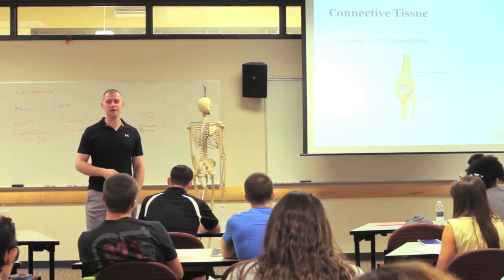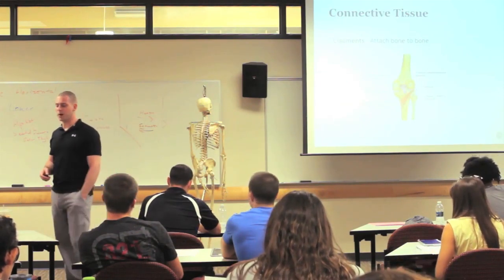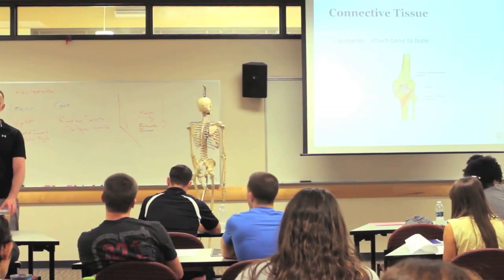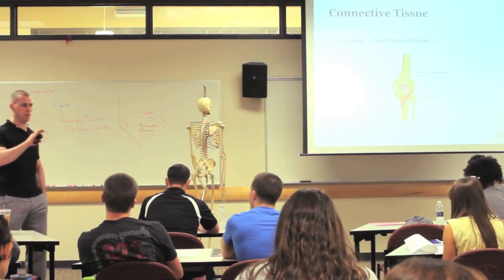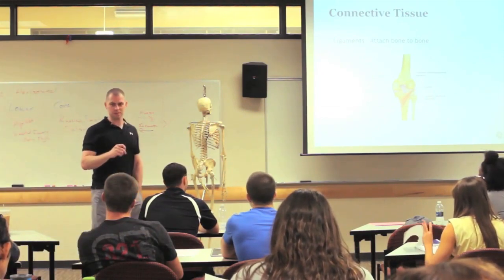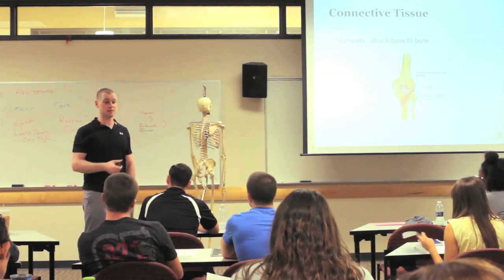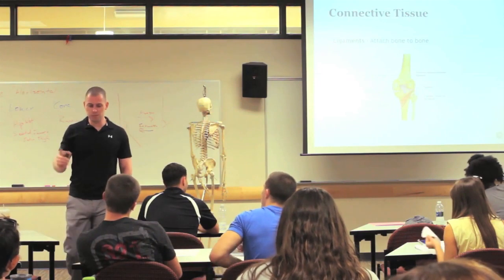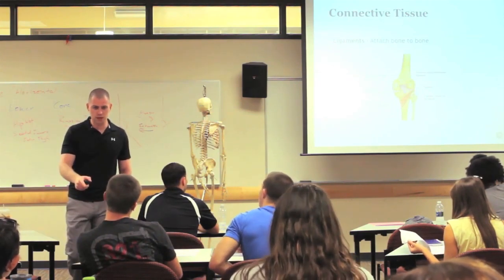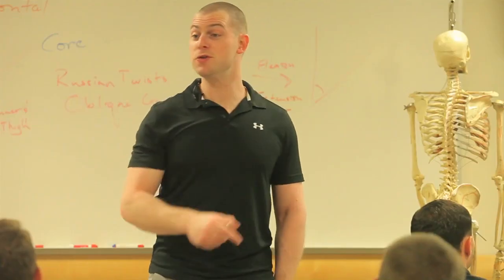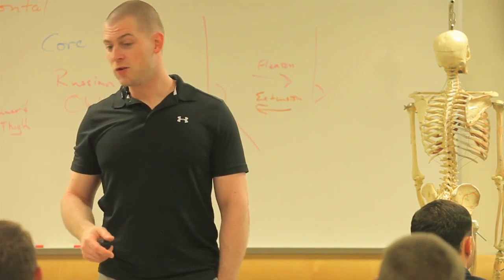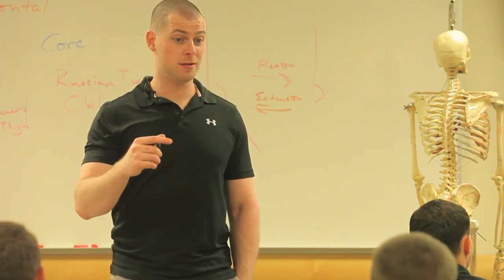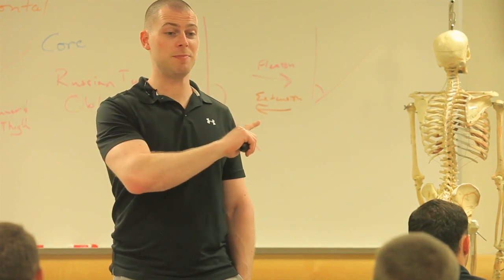A ligament — what does a ligament attach to what? Bone to bone. Wait a second, we already saw something that was bone to bone. Joints are bone to bone, which means if a ligament attaches bone to bone, then it supports joints. So we're gonna find ligaments at every joint, because that's what helps keep them together.